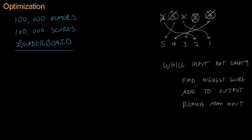You can see there are two kinds of loops in this pseudocode. We have the outer loop — while the input is not empty — which runs 100,000 times because we have 100,000 items. And there's also an inner loop hidden inside 'find the highest score,' because we have to loop through every item in the list to find it. So let's figure out how many times we have to touch a piece of data in total to sort this list.